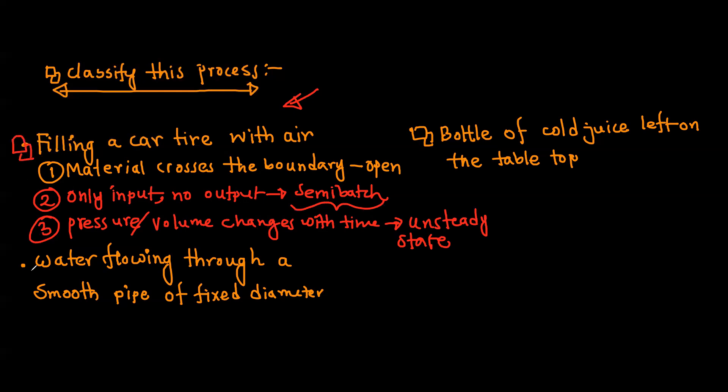Example number two: water flowing through a smooth pipe of fixed diameter. Material crosses the boundary, so it's an open system. Here we have both input and output - water flows through the pipe.